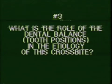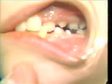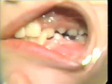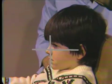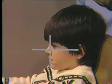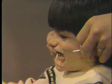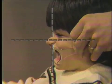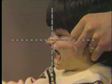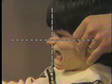What is the role of the dental balance or tooth positions in the etiology of this crossbite? Here we see the lateral view of the patient's head for facial form analysis. Maxillary and mandibular alveolar points can be related to the nasion perpendicular plane.